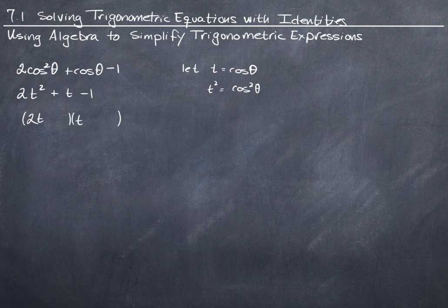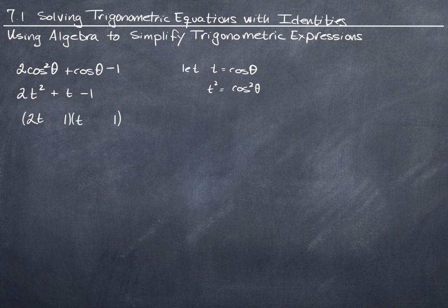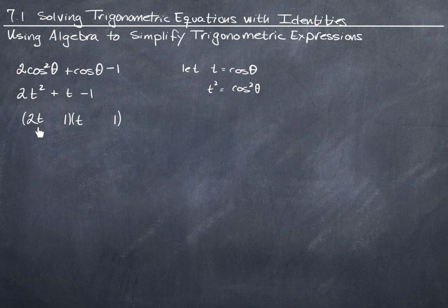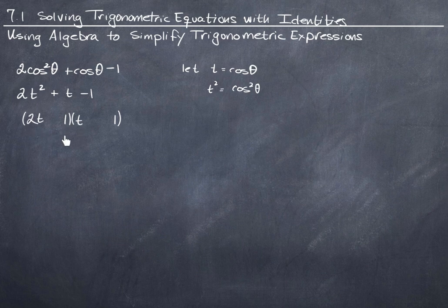These two terms multiplied by each other have to equal 1. So, I know I'm going to have a 1 and a 1 at the end. Now, when I take my inside and my outside, I have 1t here, and I have 2t here. So, these need to add up to 1t.